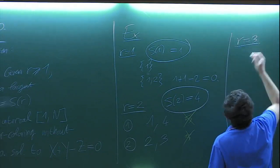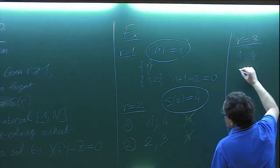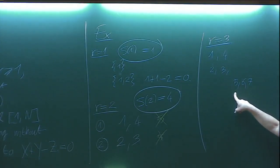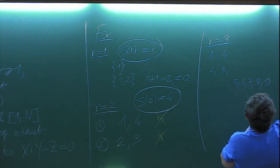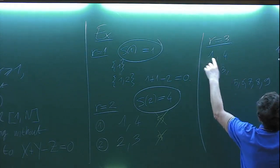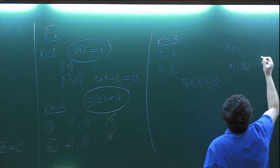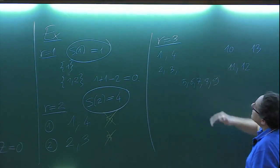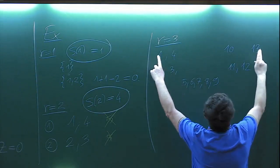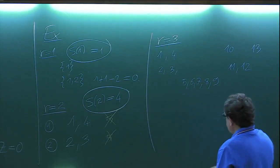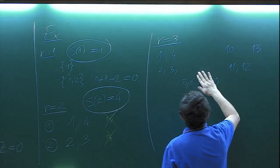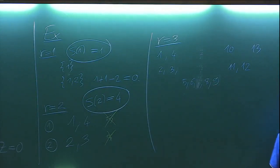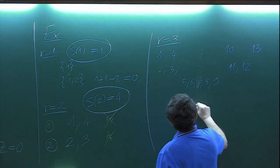For three colors, you can extend further. Starting from the 2-coloring of {1,2,3,4}, put 5 in color 3. You can go up to 9 this way. Then 10 goes to color 2, 11 goes to color 3, 12 to color 3, 13 to color 3. There is no monochromatic solution in this 3-coloring. But 14 cannot be placed in any color. This coloring is essentially unique, and S(3) = 13.